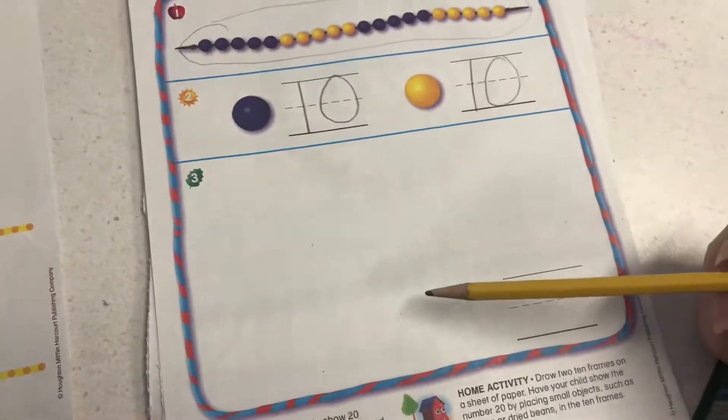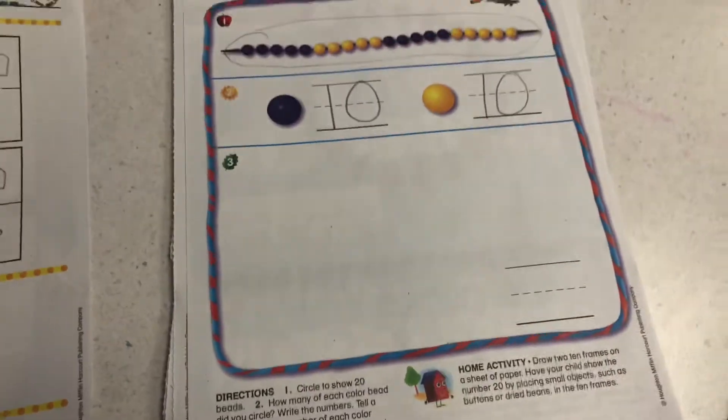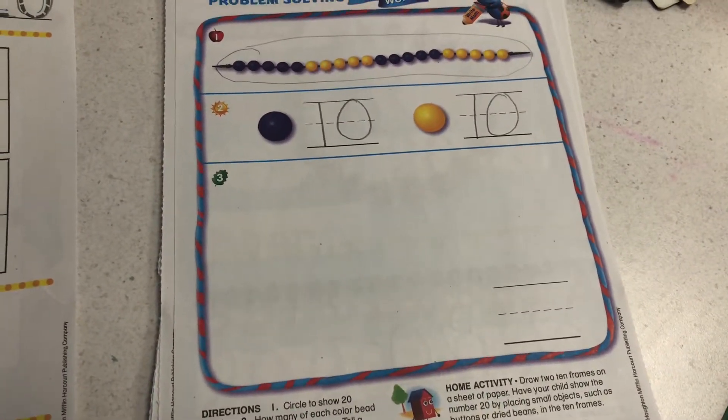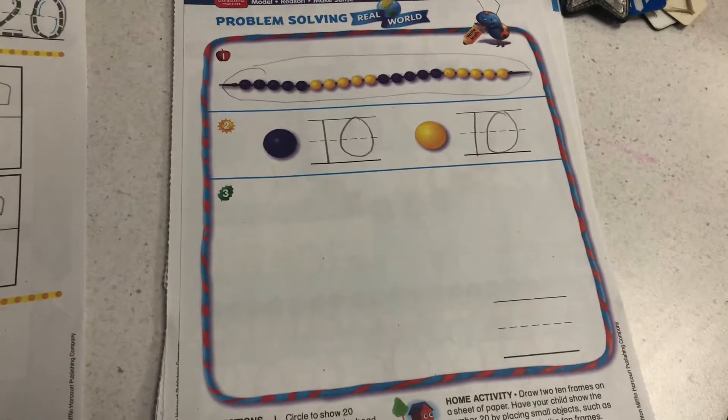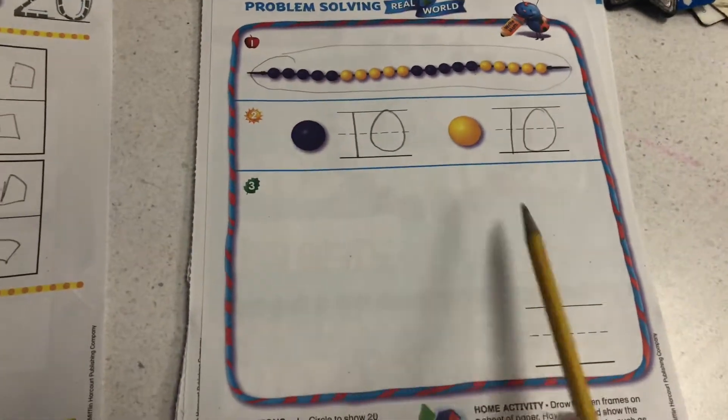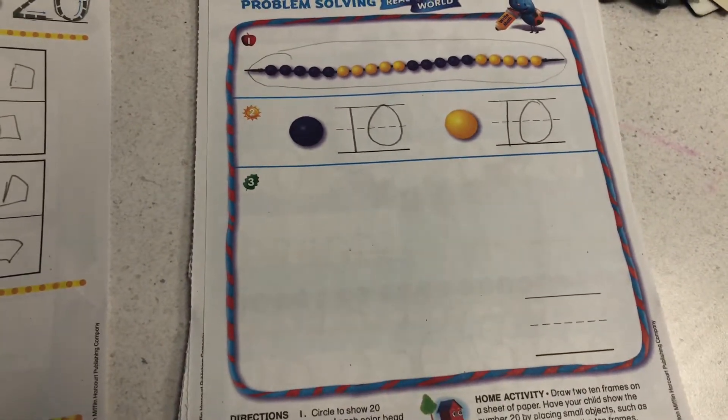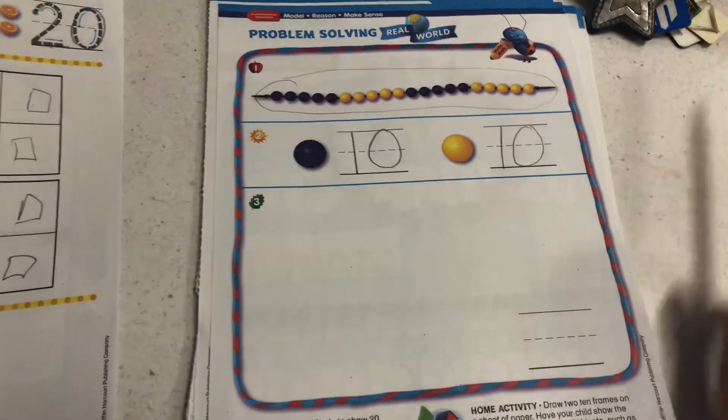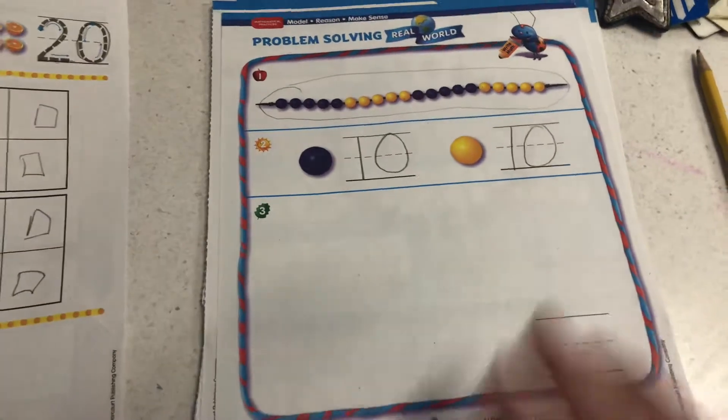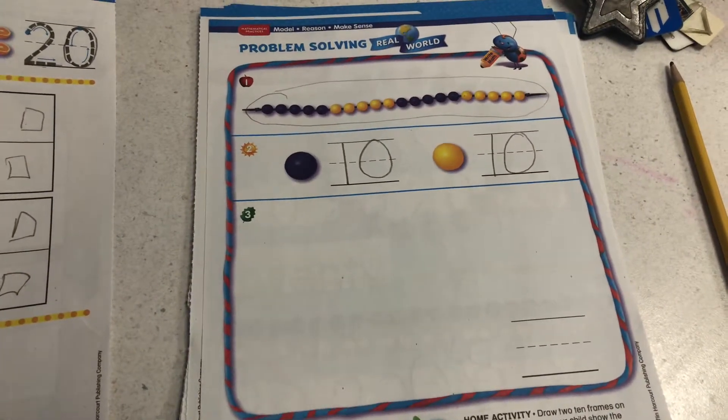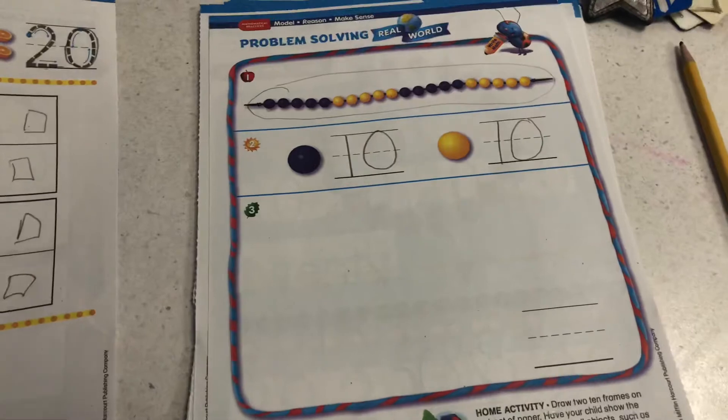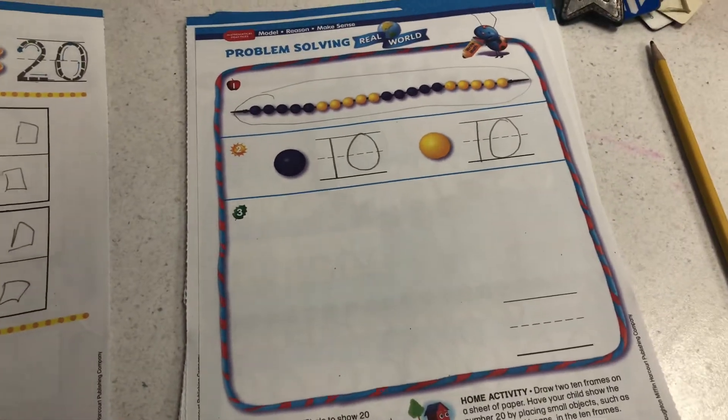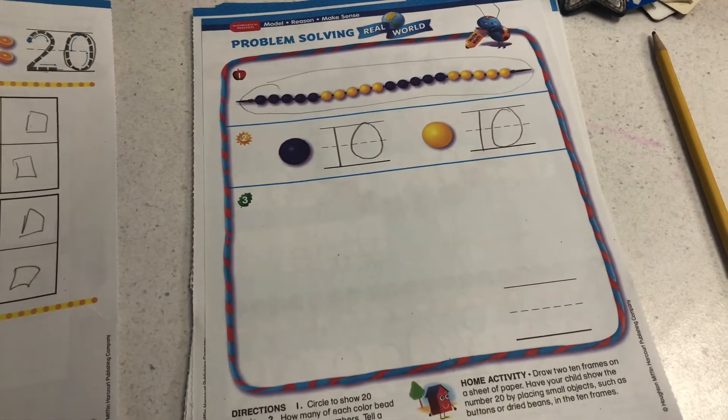All right, last part. Draw and write to show what you know about 20. So in this part, friends, you could draw a picture of 20 things, anything you want. And then you're going to tell mom and dad about what you drew and how maybe you chose to draw it. Okay. All right, friends, enjoy this lesson. Knock our socks off. I know you will.